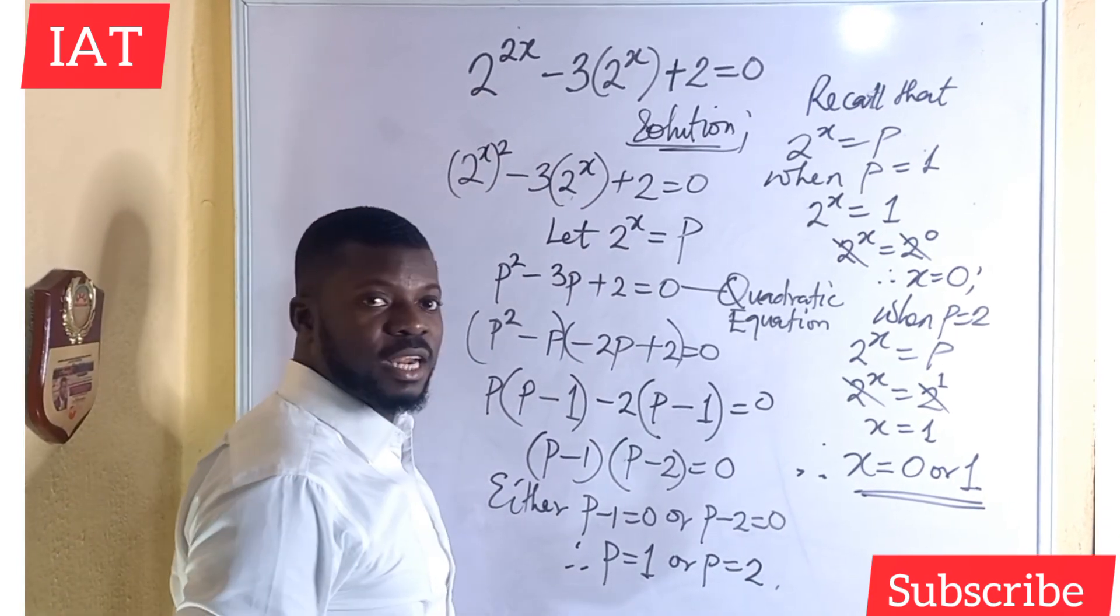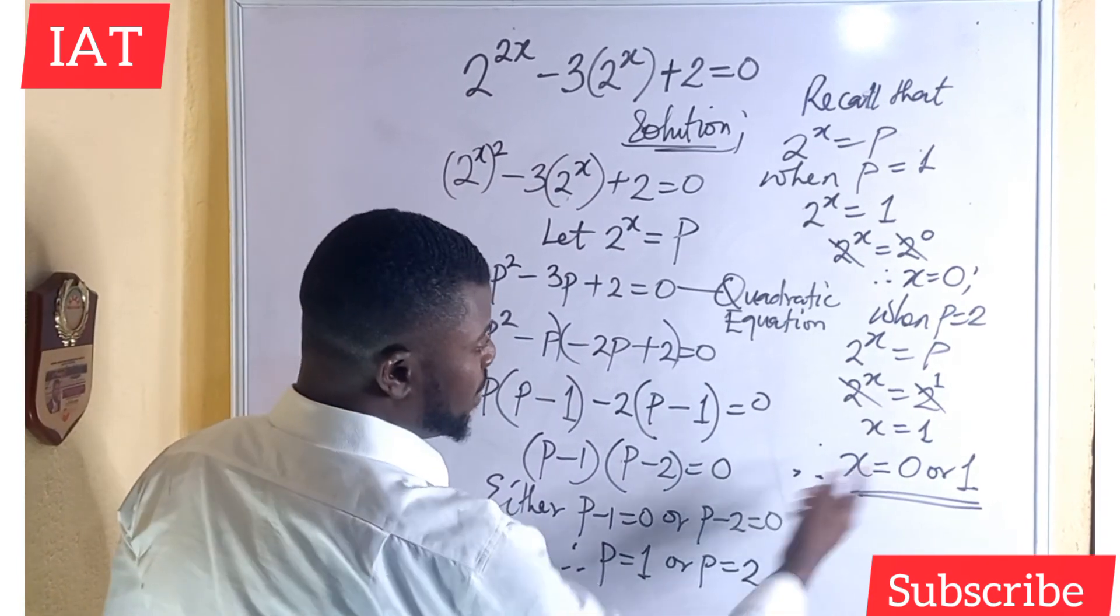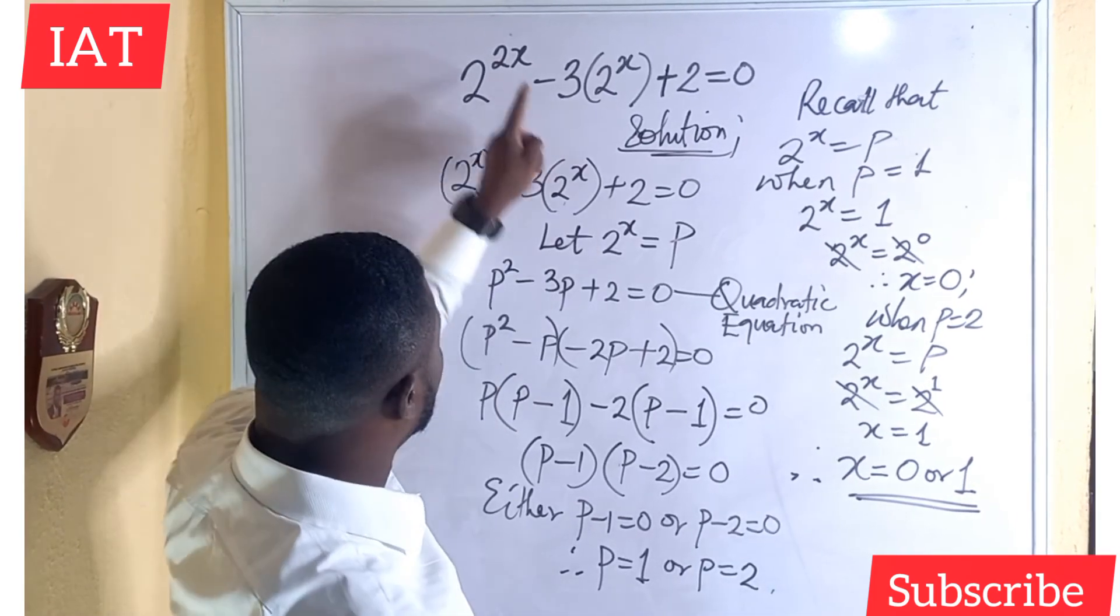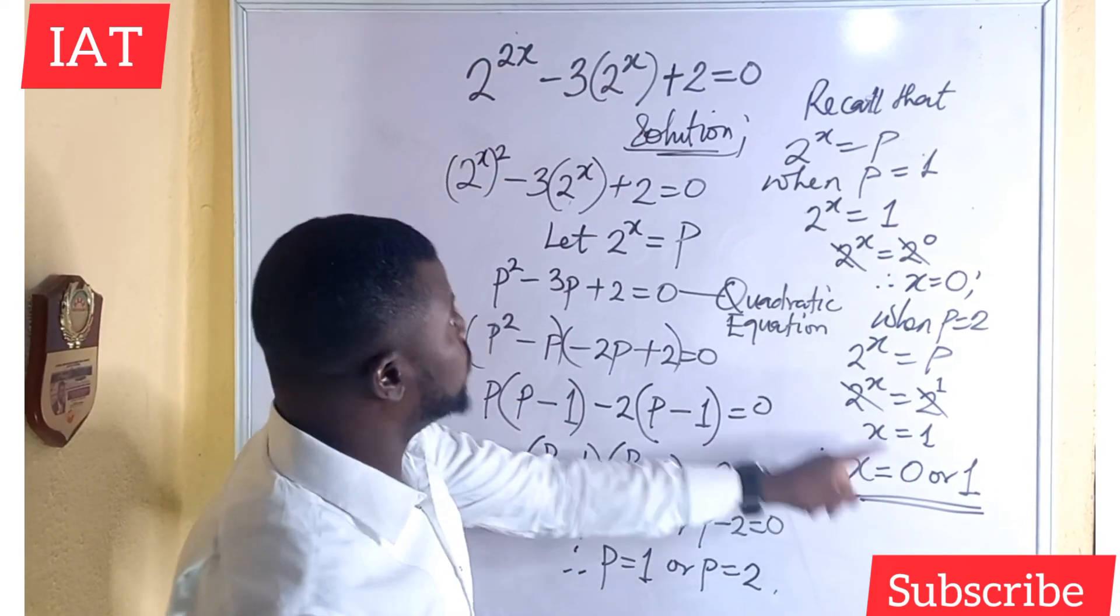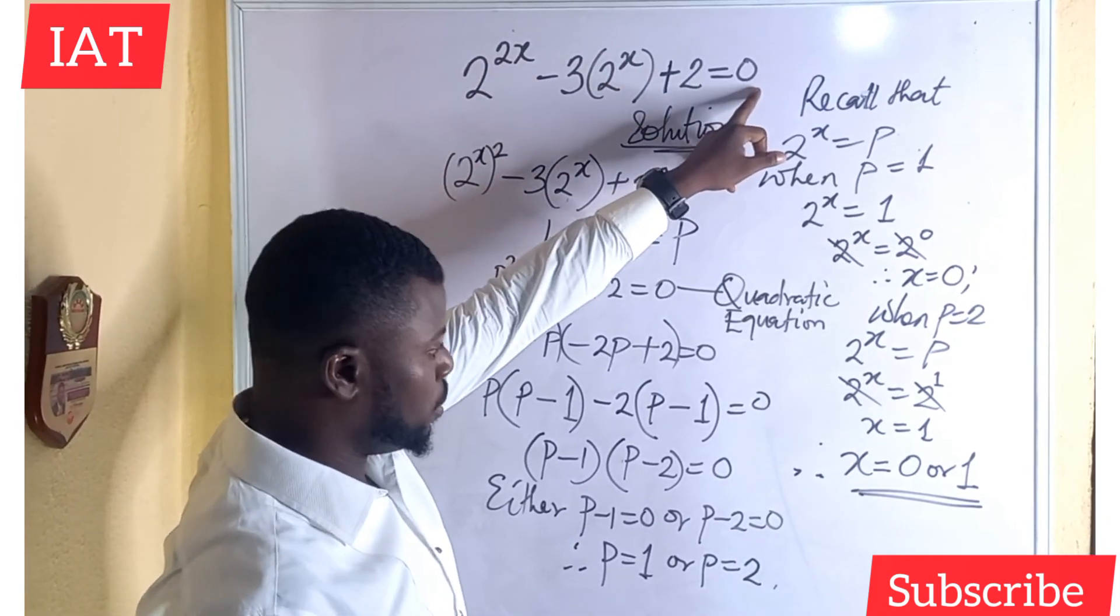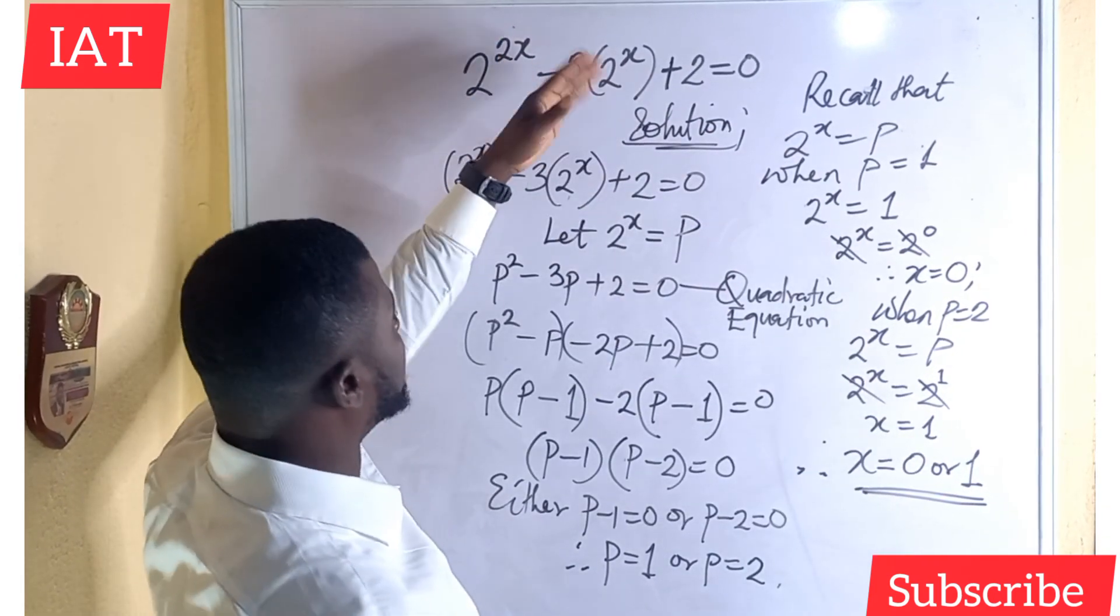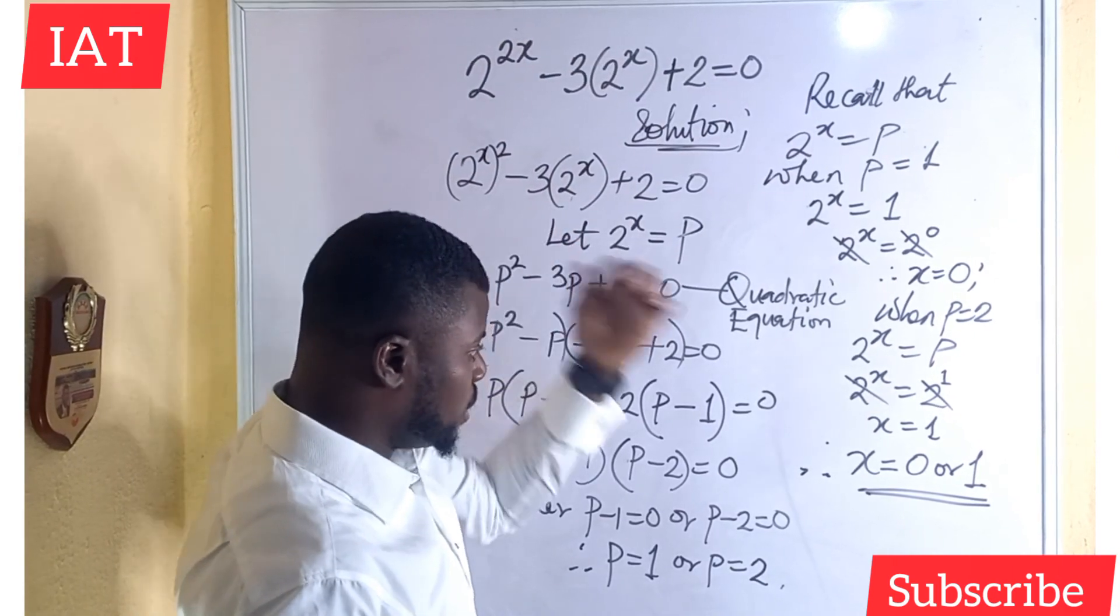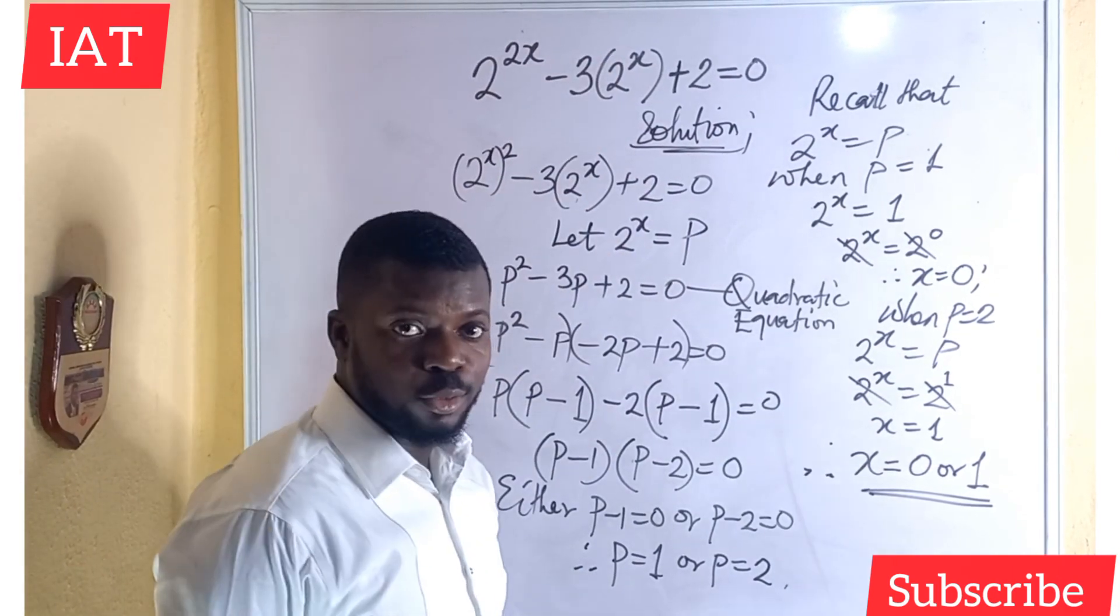If you want to check for extraneous solutions, check if the value of x is correct. Anywhere you see x in this expression, you can substitute 0. When you substitute 0, you see that the left hand side will give you 0. If you also substitute 1, the left hand side will also give you 0. Whichever one that works, that means that is the solution to that problem.